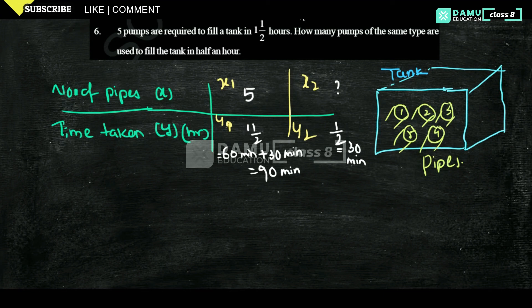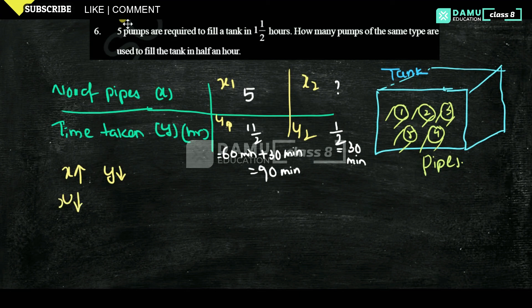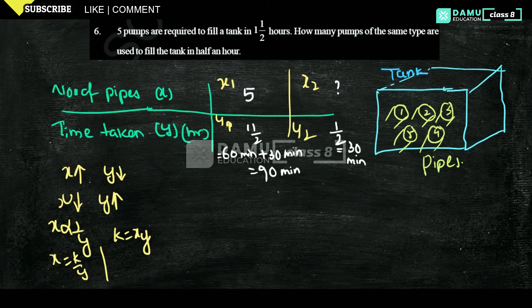If you increase the number of pipes, time taken will decrease. If you decrease the number of pipes, time taken will increase. So those two are inversely proportional, meaning X = K / Y, so K = X × Y. We can write the formula as X1 × Y1 = X2 × Y2, and we need to find X2, which equals X1 × Y1 / Y2.